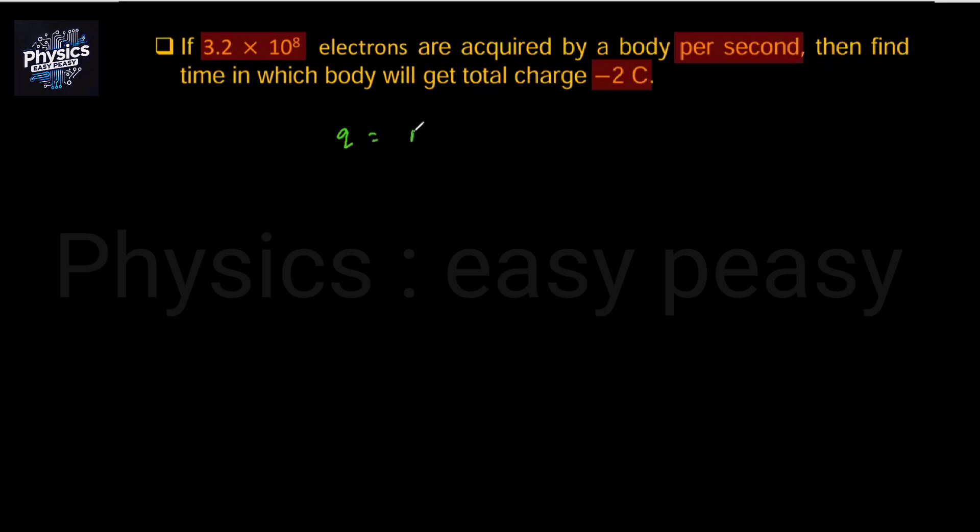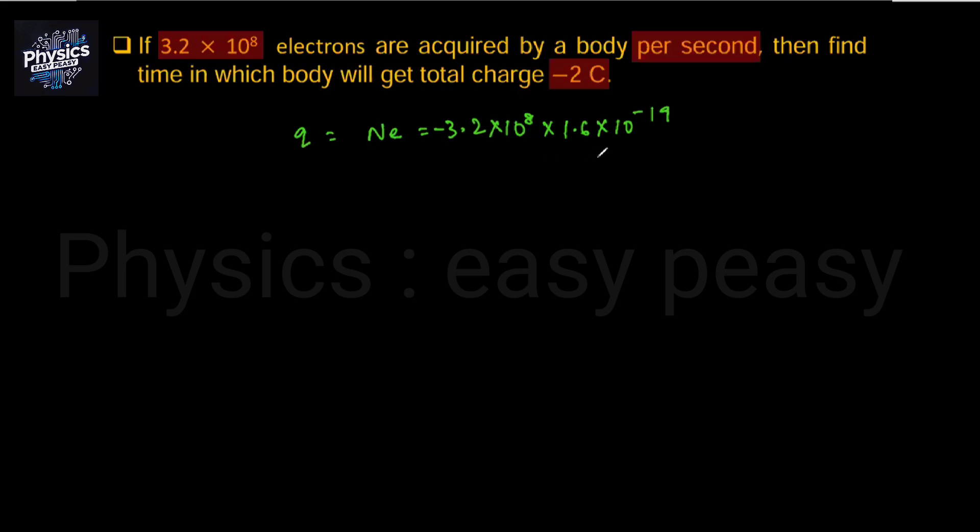Alternatively, Q is equal to n times e. Use the value 3.2×10^8. The charge of each electron is 1.6×10^-19, negative. Now, what is the unitary method?